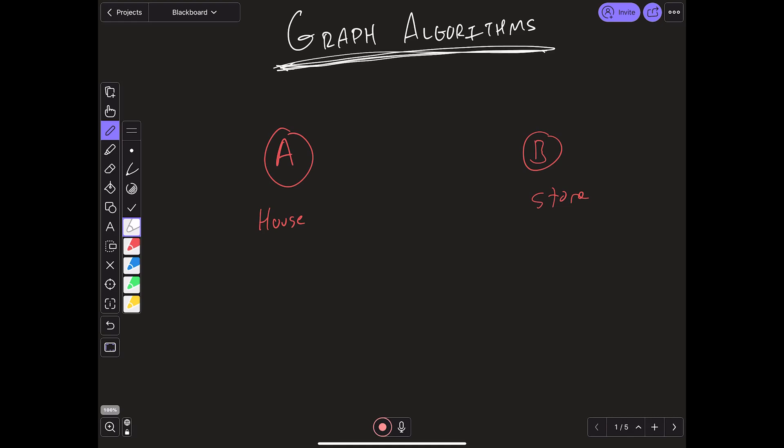Let's say you are at your house and you wanted to go all the way over to the store across the street. Well, what you would do is you would go outside and walk all the way there. This is essentially a graph.